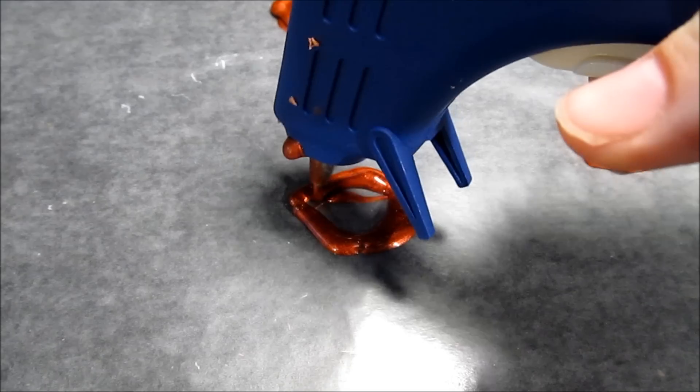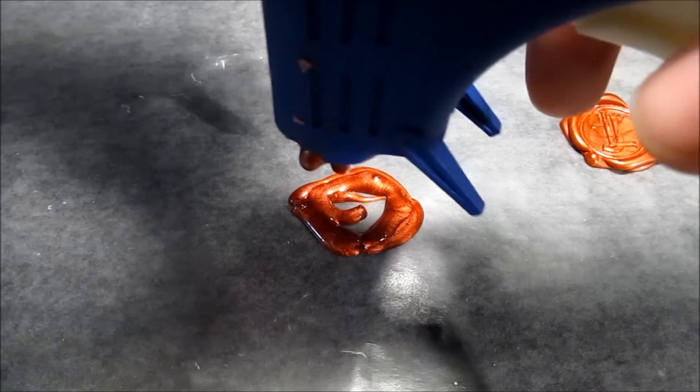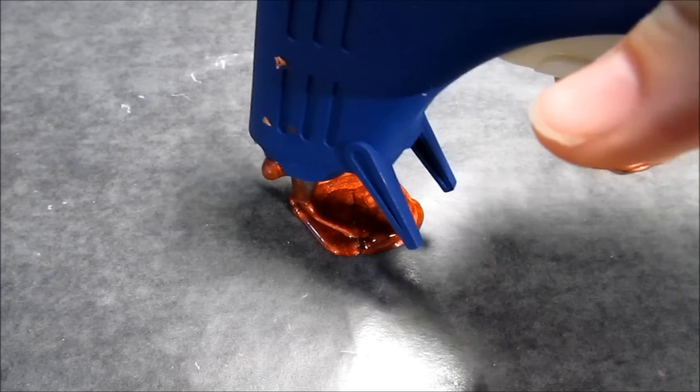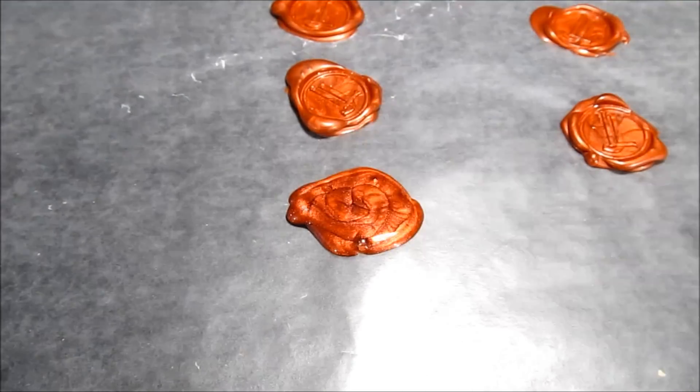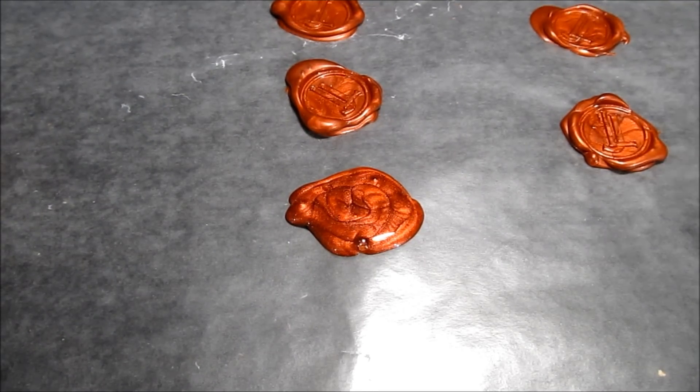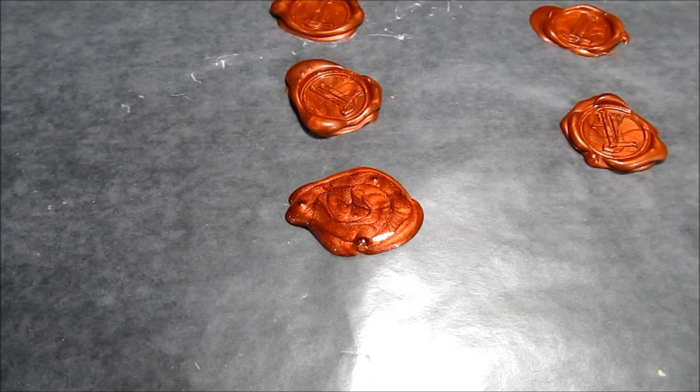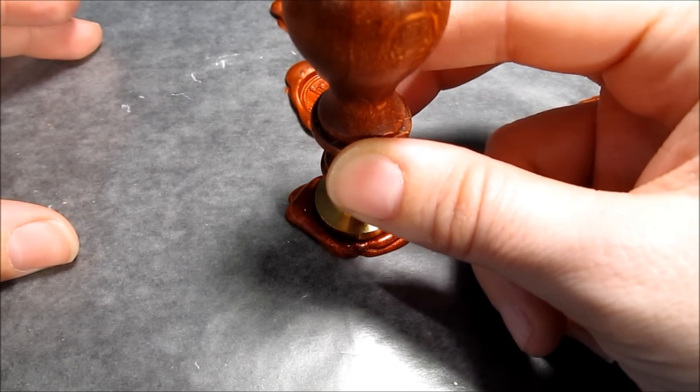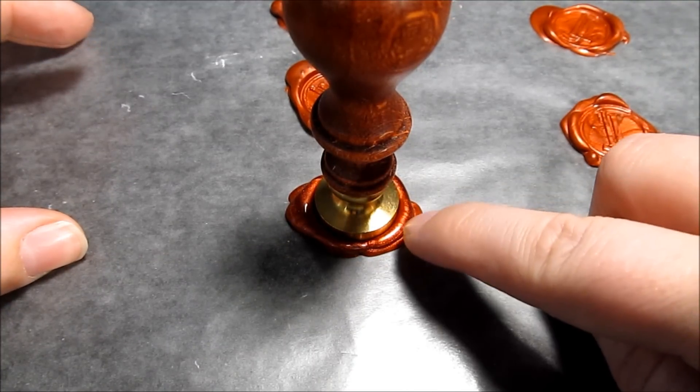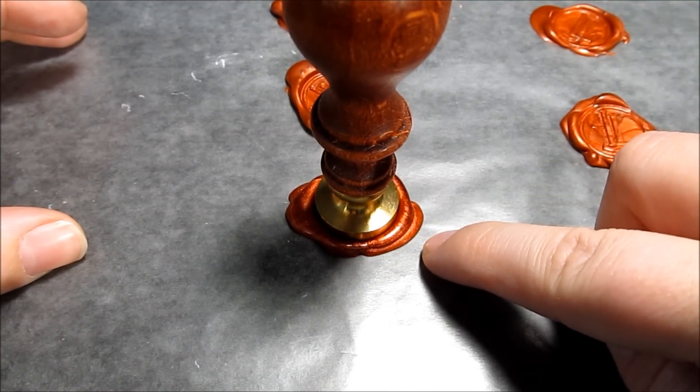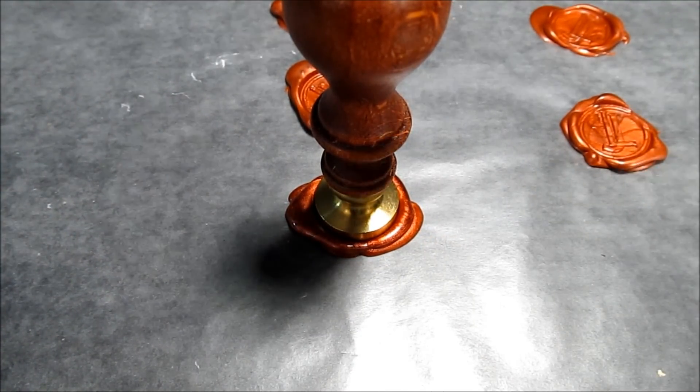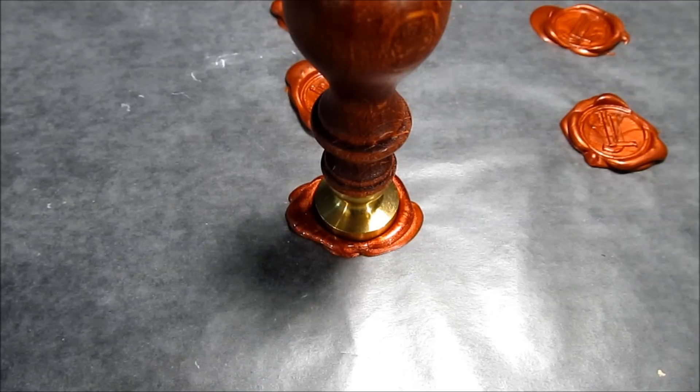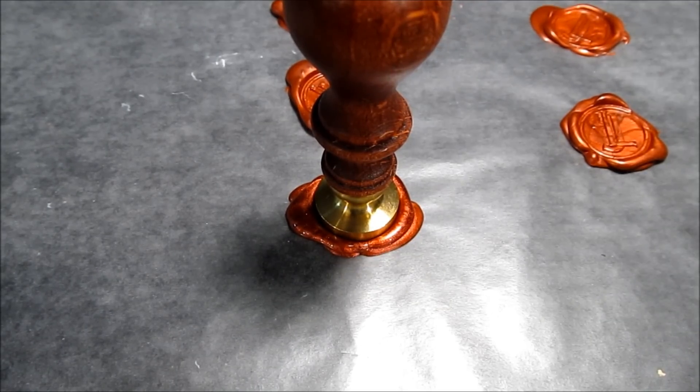So once you do your outline, fill it in. Put a good amount of wax. And then because you did your outline first, that will start drying quicker. So when you press your stamp into it, it'll actually create that nice texture on the sides that makes it look like you did the original process of melting the wax over top of a flame instead of using a hot gun because it's easier.